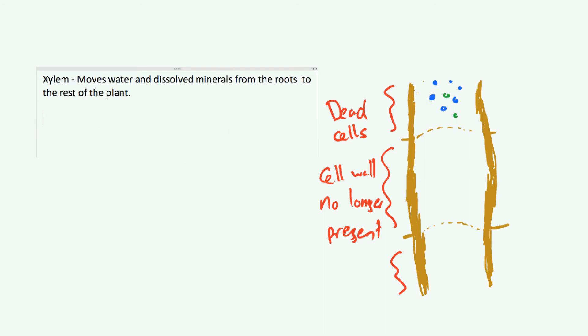There are no cell walls between the cells. The cells of the xylem tube are dead and they're actually reinforced with a substance called lignin. Lignin makes the tube stronger so it won't burst based on the amount of water inside it. Water and minerals move in only one direction.